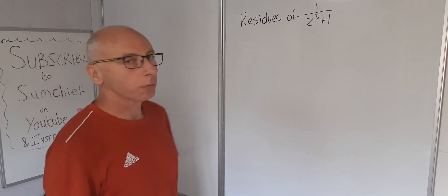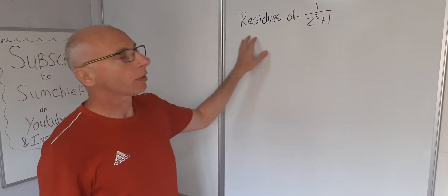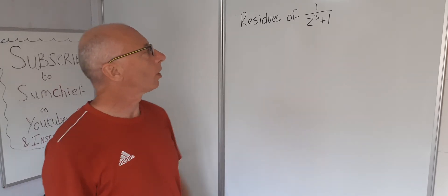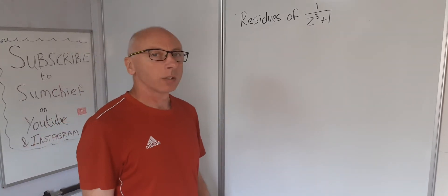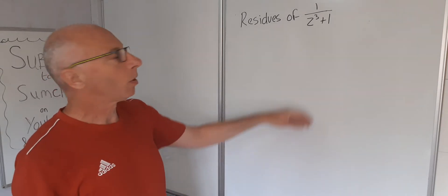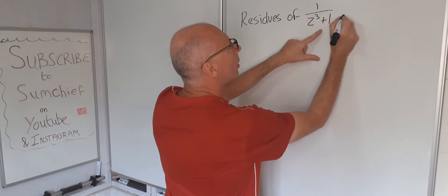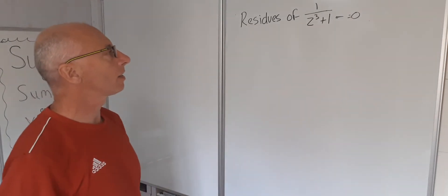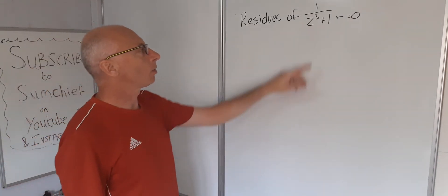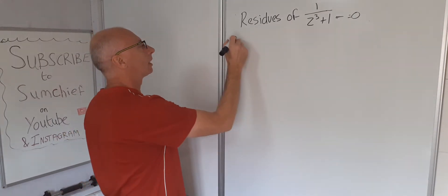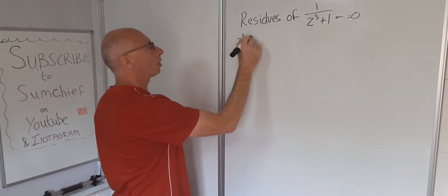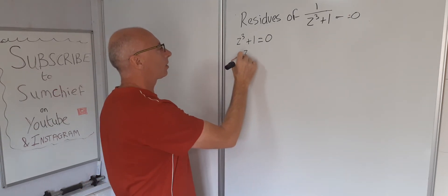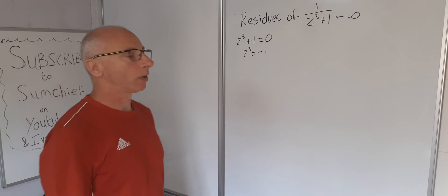In this video we're going to look at some complex analysis. I'm going to find the residues of the function 1 over z cubed plus 1. To find the residues, we want the denominator to equal 0 — so we're looking for the singularities. We need to solve z cubed plus 1 equals 0, which gives us z cubed equals minus 1.